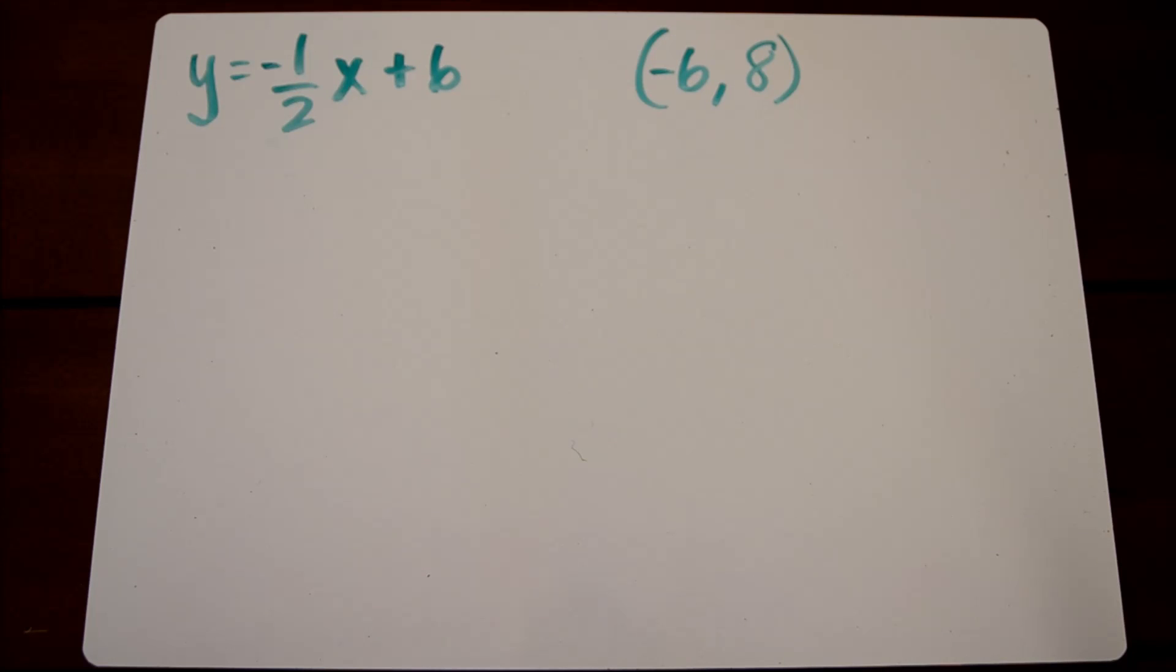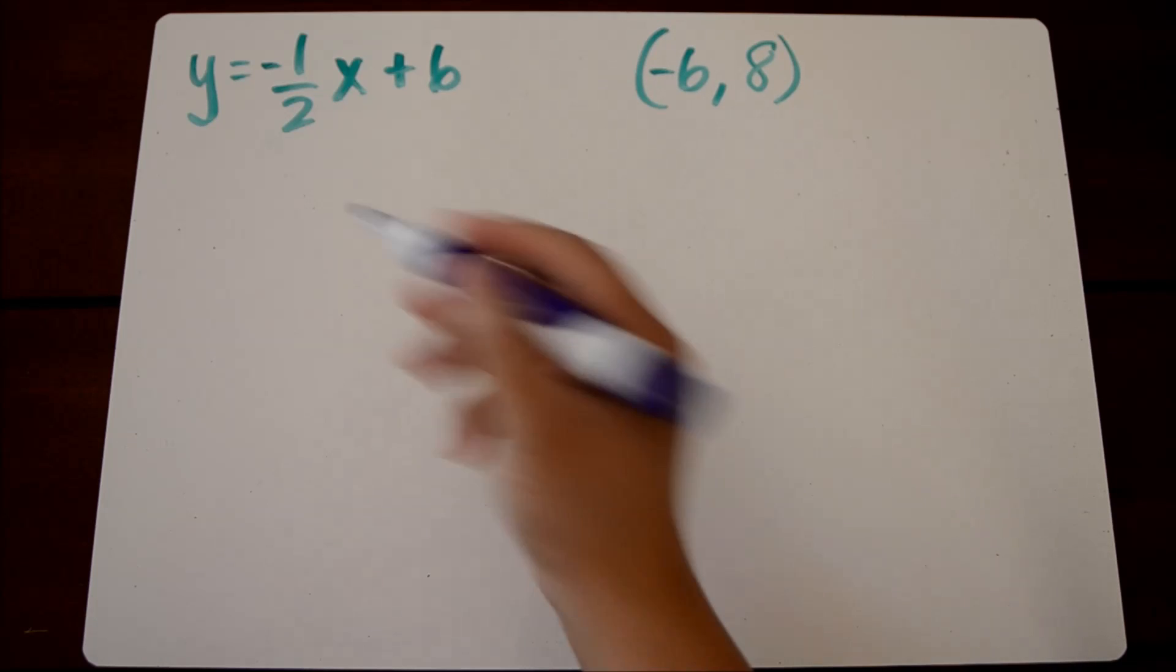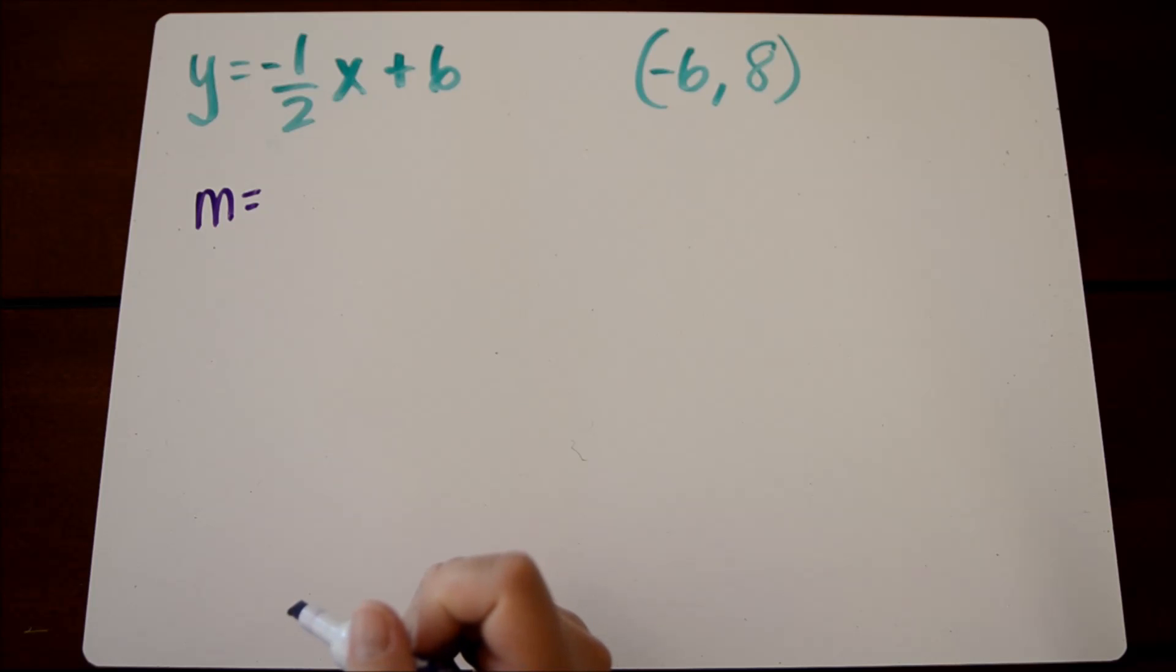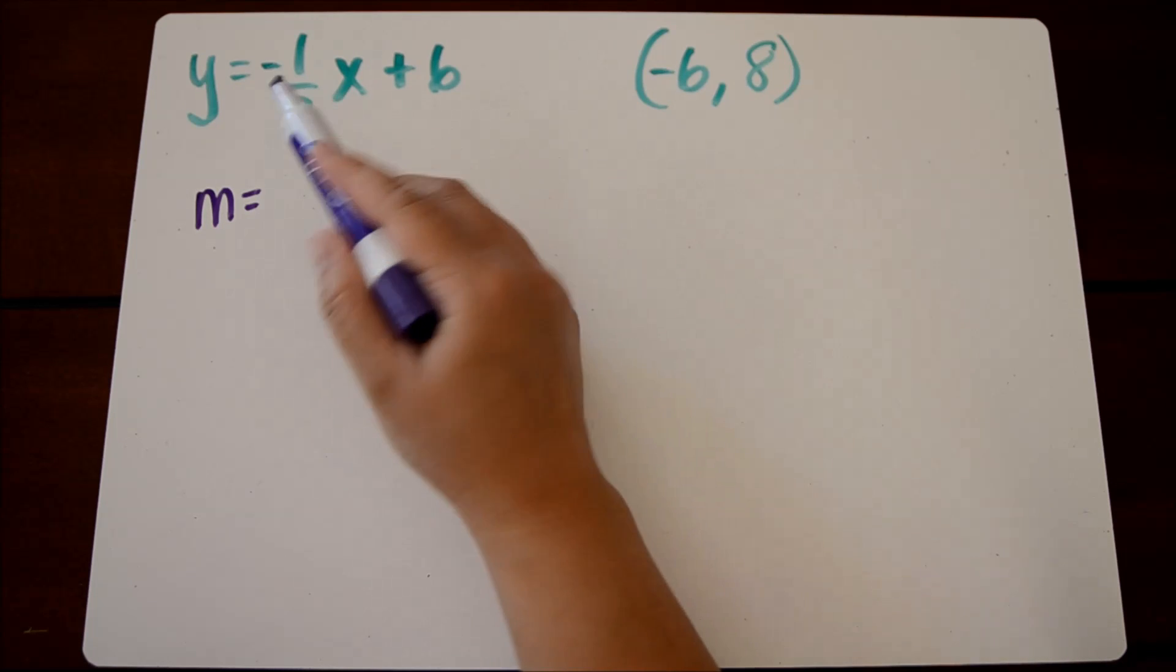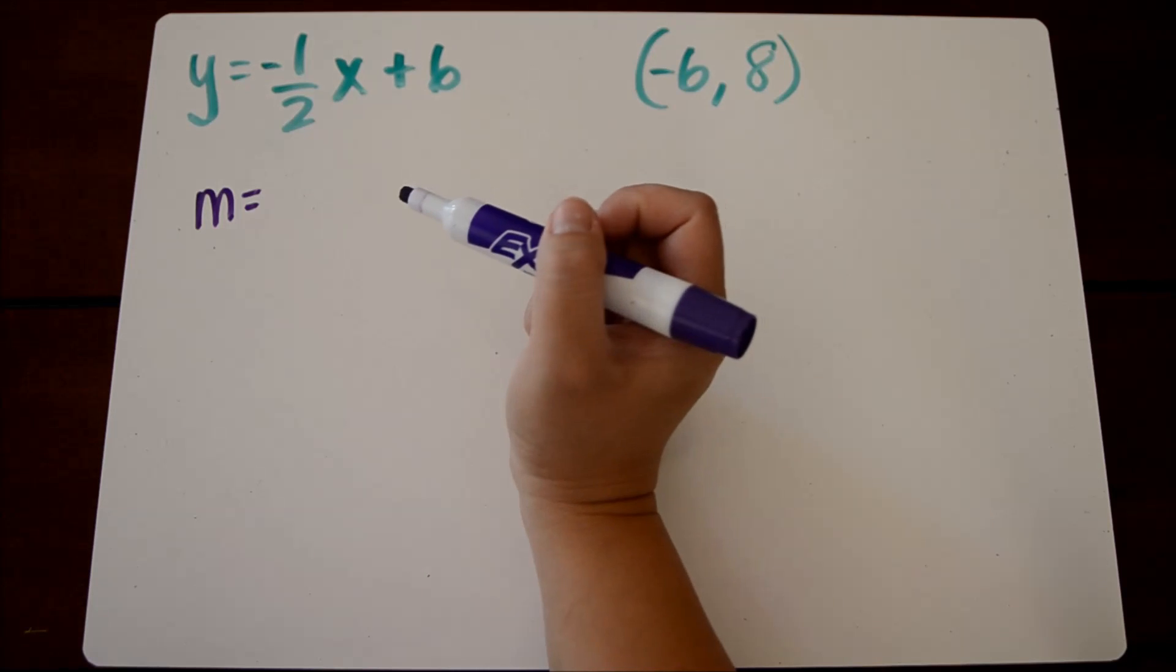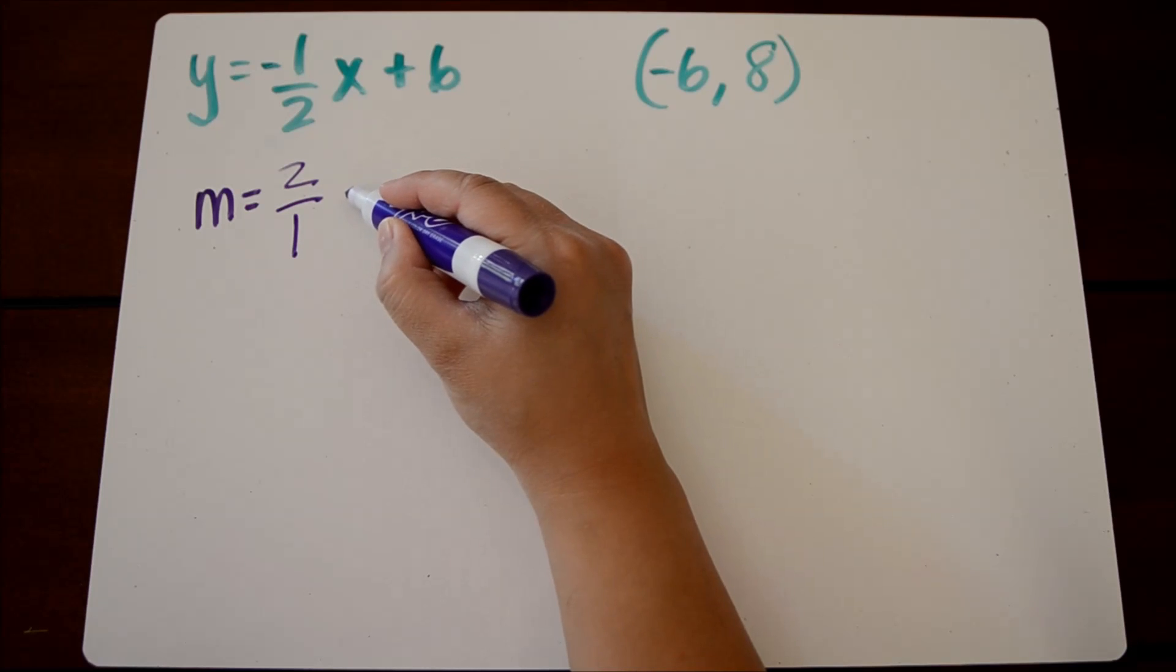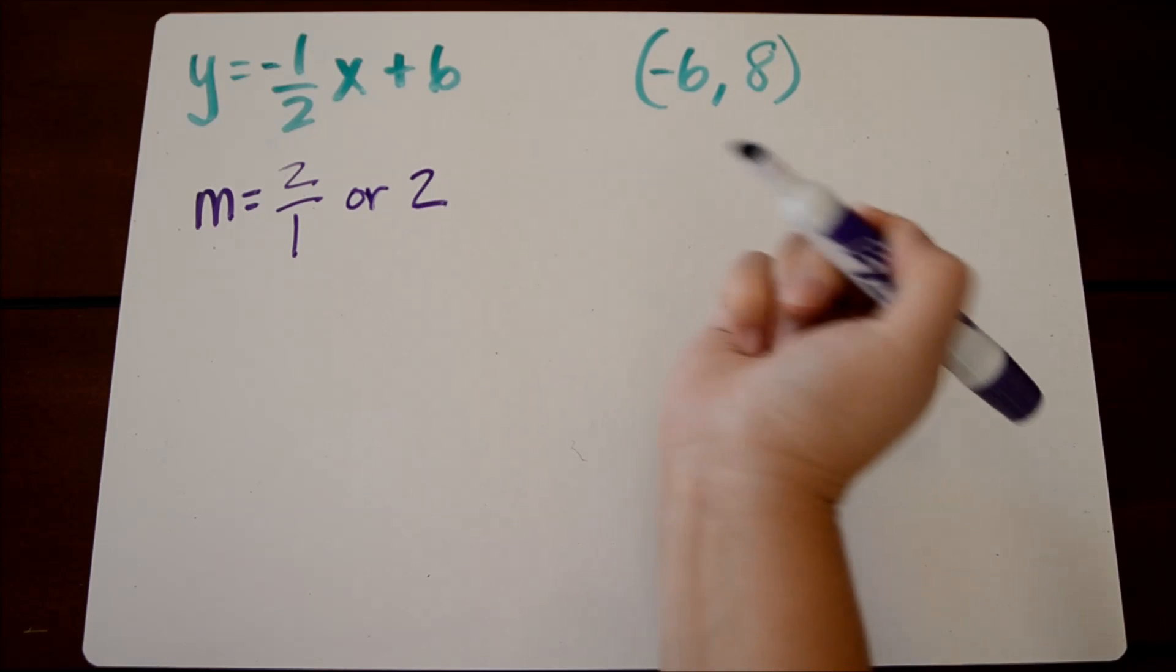Let's do one more example. So we're going to write an equation that's perpendicular to this equation and goes through the point negative six-eight. The opposite reciprocal of negative one-half, we're going to take the opposite sign so it's going to be positive. And then to flip one over two, that's going to become positive two over one, or the simplified version of that would just be two.